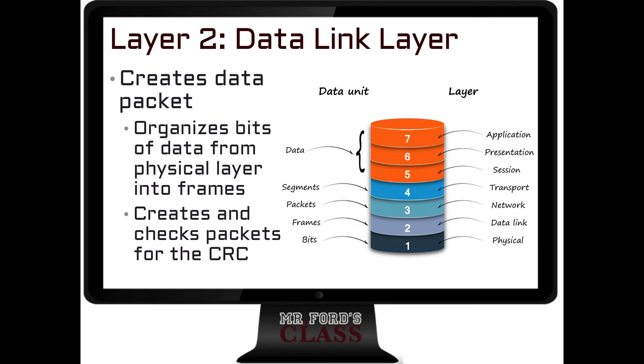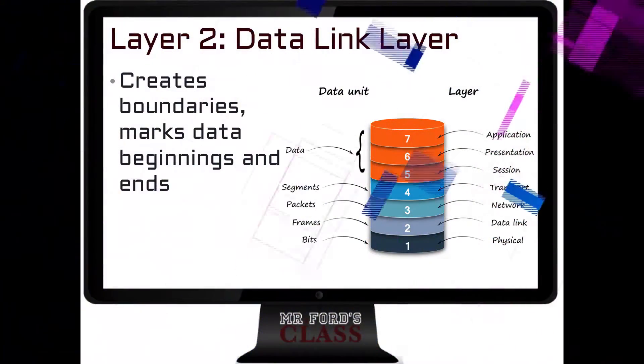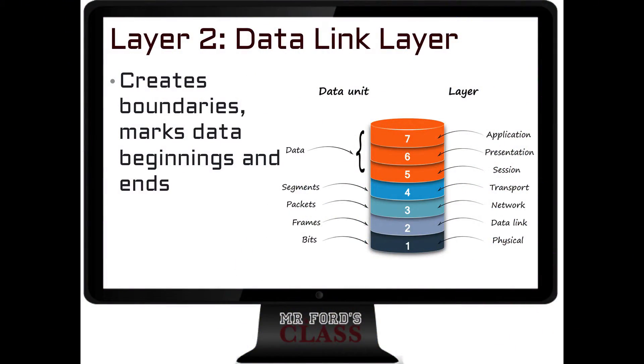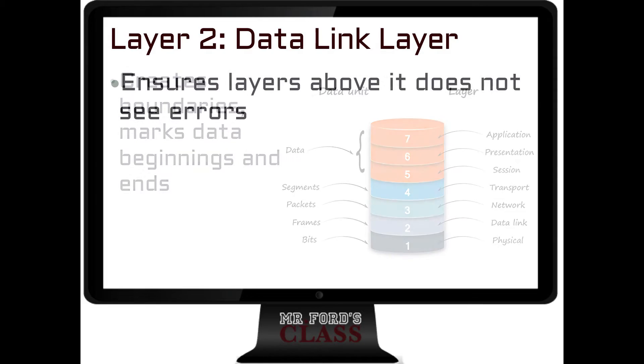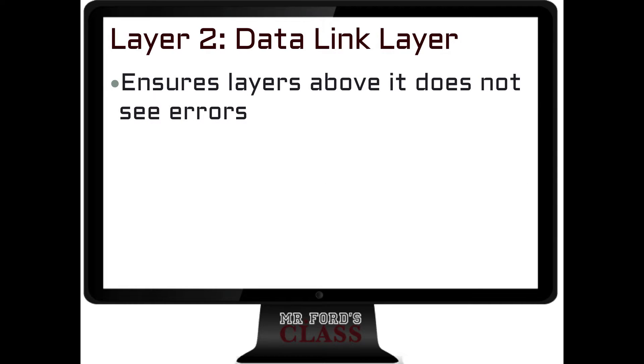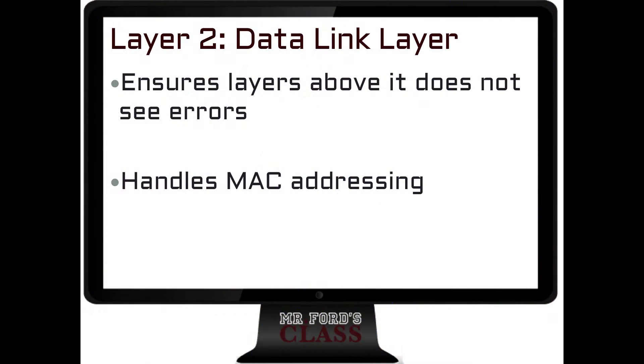It's also going to create and check something called the CRC, which deals with error checking. It wants to make sure that the data packet — the frame — is intact and what it was supposed to be. This layer creates boundaries, marks data's beginning as well as ends, and ensures the layers above it do not see errors. It's going to be in charge of quality control, making sure data that comes into the network is what it was when sent out. It does your data checking and error checking.